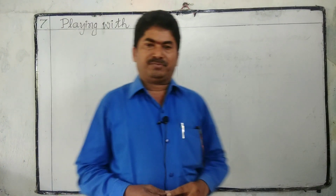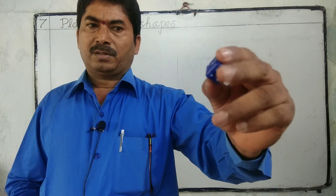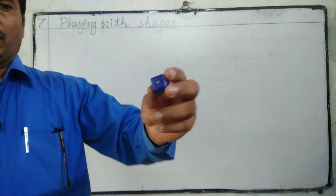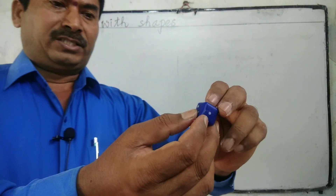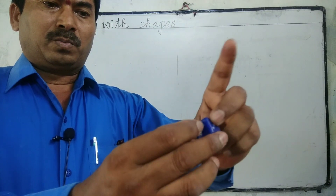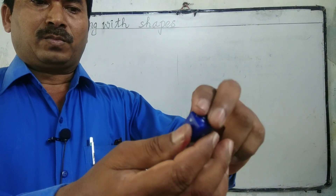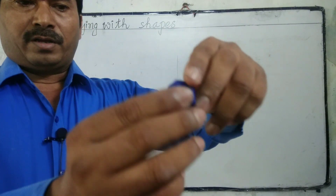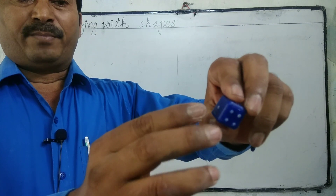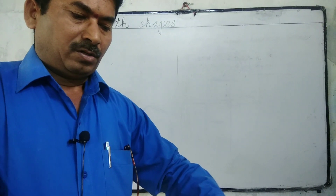In this chapter, Playing with the Shapes, first we have to know about dice. This is very, very important in competitive exams. A dice has six faces — one, two, three, four, five, six — and every face is indicated by a number of dots.